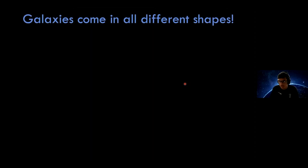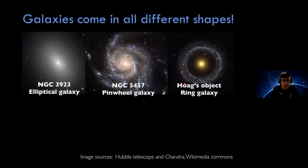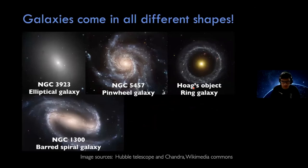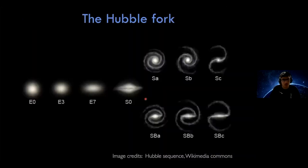The Milky Way is a spiral galaxy, but galaxies come in many different shapes. They can look like ellipses, like pinwheels, like a ring, or like a barred spiral — with a bar in the center and spirals going around — and really exotic shapes like jellyfish. This classification system based on how galaxies look is known as the Hubble fork, with different kinds of spirals, barred spirals like the Milky Way, and ellipses.